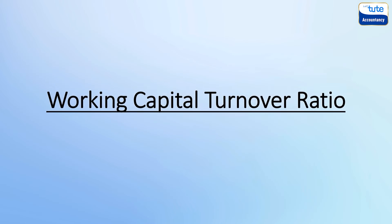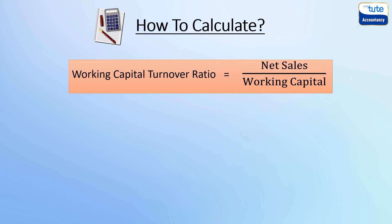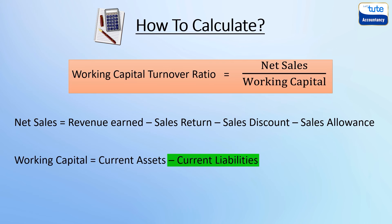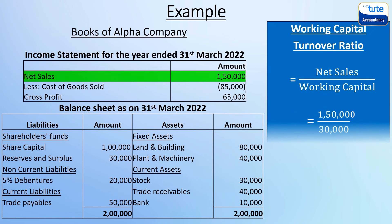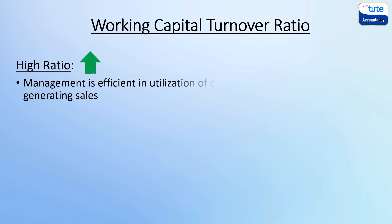Lastly, the working capital turnover ratio measures how efficiently a company is using its working capital to generate sales. The formula is net sales divided by working capital, where working capital is current assets minus current liabilities. In this example, net sales are 1,50,000 and working capital comes to 30,000, derived by deducting current liabilities from current assets. So the working capital turnover ratio comes to 5 times, meaning every unit of currency of working capital produces revenue of 5.